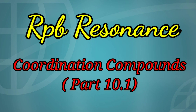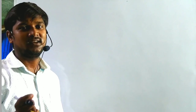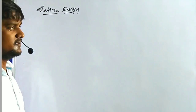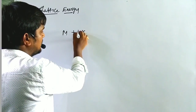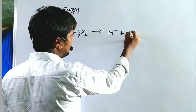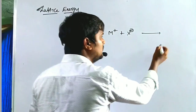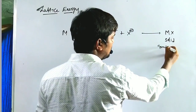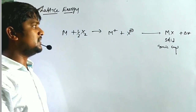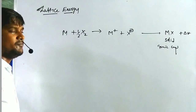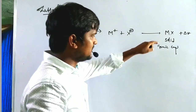Welcome to the RP Resonance Commission. We are discussing another application of crystal field stabilization energy. The second application is lattice energy. The definition of lattice energy: whenever cations and anions combine together to give one mole of a solid ionic crystal, it releases some energy. The amount of energy required to form one mole of that ionic compound is called lattice energy.